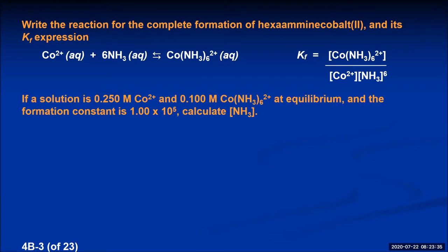Now, if we can write a Kf expression for a formation reaction, then we can quantitatively do calculations based upon that. If a solution is 0.250 molar in cobalt 2 ions and 0.100 molar in the hexamine cobalt 2 complex at equilibrium, and the formation constant is 1.00 times 10 to the fifth, calculate the concentration of the ammonia in the solution. We have the formation expression written in the upper right corner. We know the value of Kf is 1.00 times 10 to the fifth, the concentration of the complex ion is 0.100 molar, and the cobalt ion concentration is 0.250 molar.